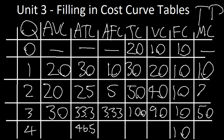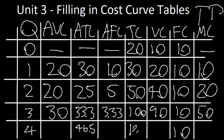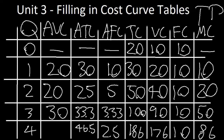The change in total costs is 20, and now we only have the final row to calculate. Since we already know what average total cost is, we need to find total cost, which we can get by multiplying by the quantity. So 46.5 times 4 is 186. Total cost minus fixed cost is 176. Marginal cost, the difference, is 86. Fixed cost divided by 4 is 2.5. And variable cost — 176 over 4 — is 44.